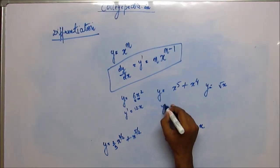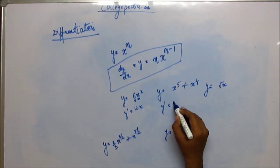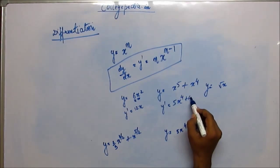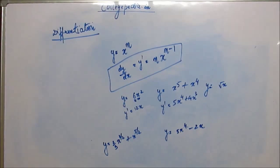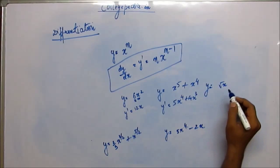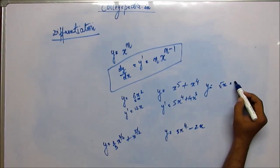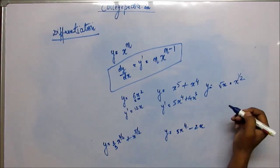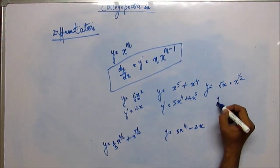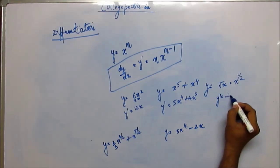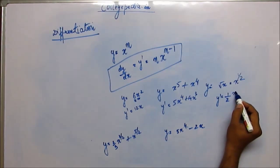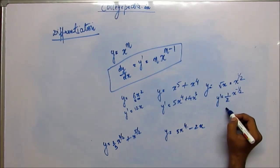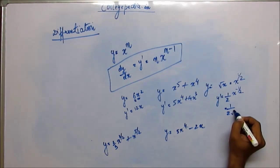For y = x^5 + x³: the power 5 comes down and is reduced by 1, and similarly for x³. So y' = 5x⁴ + 3x³. For y = √x, written as x^(1/2): y' brings down 1/2 and reduces the power by 1, giving x^(−1/2). So y' = 1/(2√x).